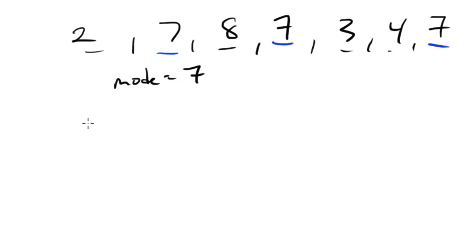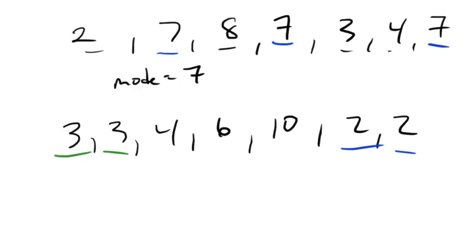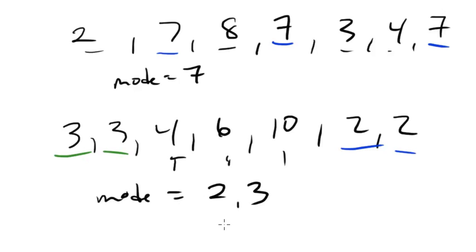Can you have two modes? You can. So let's say we had a list like: 3, 3, 4, 6, 10, 2, 2. We've got two 3s and two 2s — those appear the most, while there's only a single one of each of the others. So the mode in this case is both 2 and 3. That's the only exception in these statistics questions where you can have more than one answer.